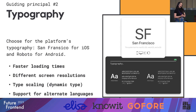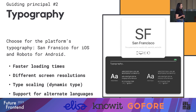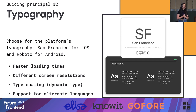Guiding principle number two — you probably noticed I didn't mention typography in the foundations. That's because typography is the one tricky part about universal design systems handling web and mobile applications. Typography is actually one area where you should probably choose the platform's native typography. In iOS that means San Francisco as a typeface, and Android uses Roboto. Why? Faster loading time, definitely. Your brand might have a beautiful typography that works really well on web, but loading that on mobile applications is a little bit tricky.